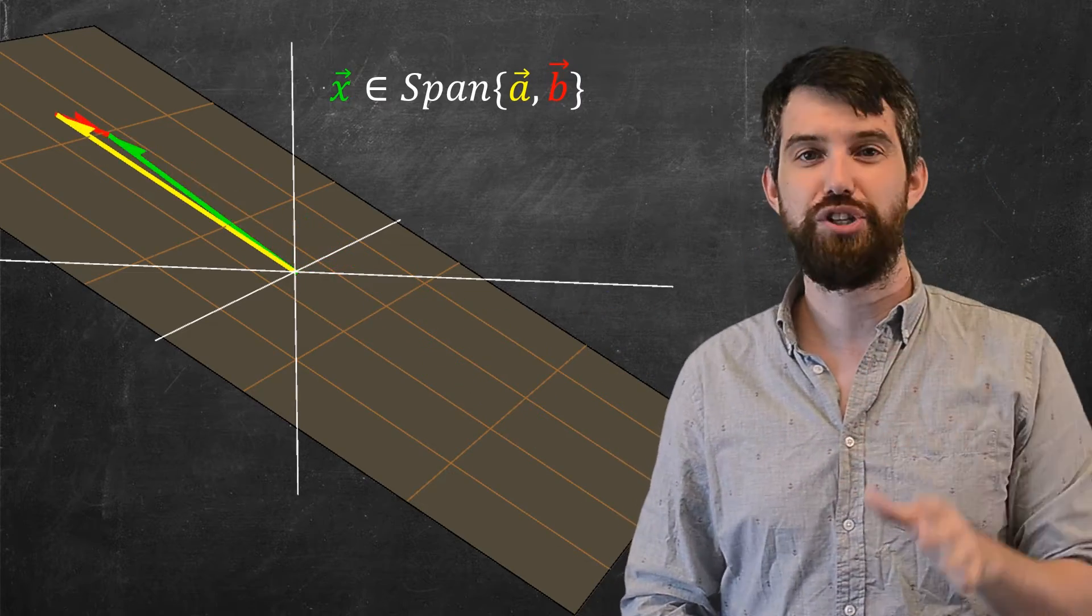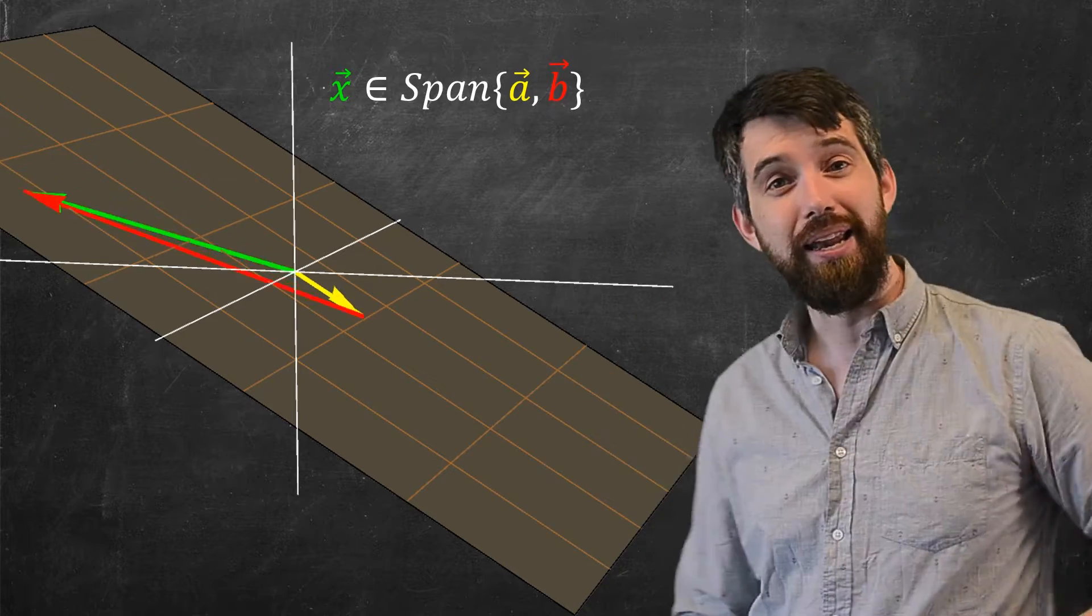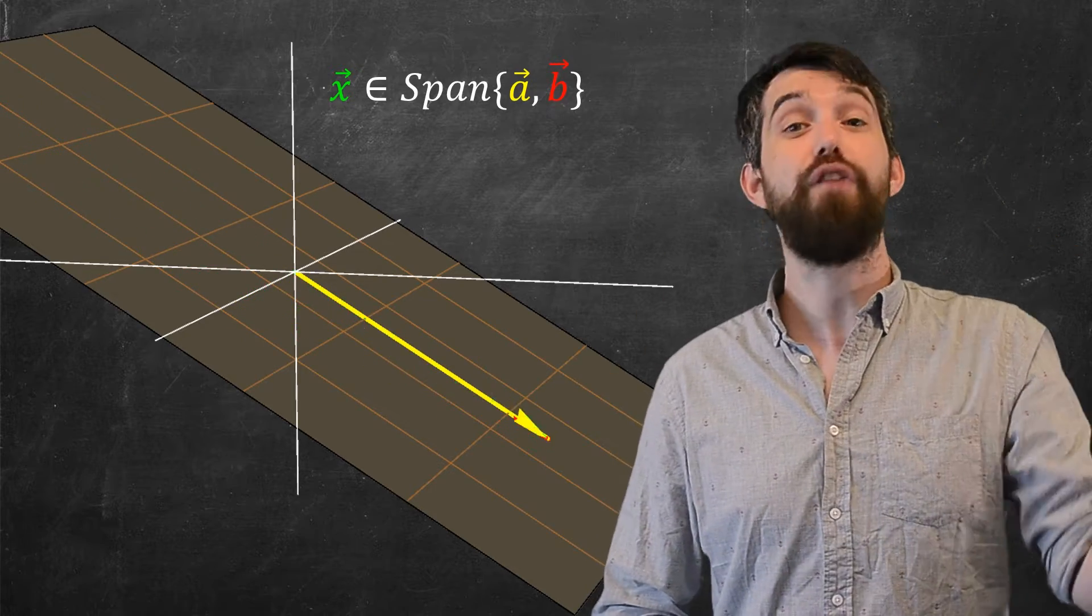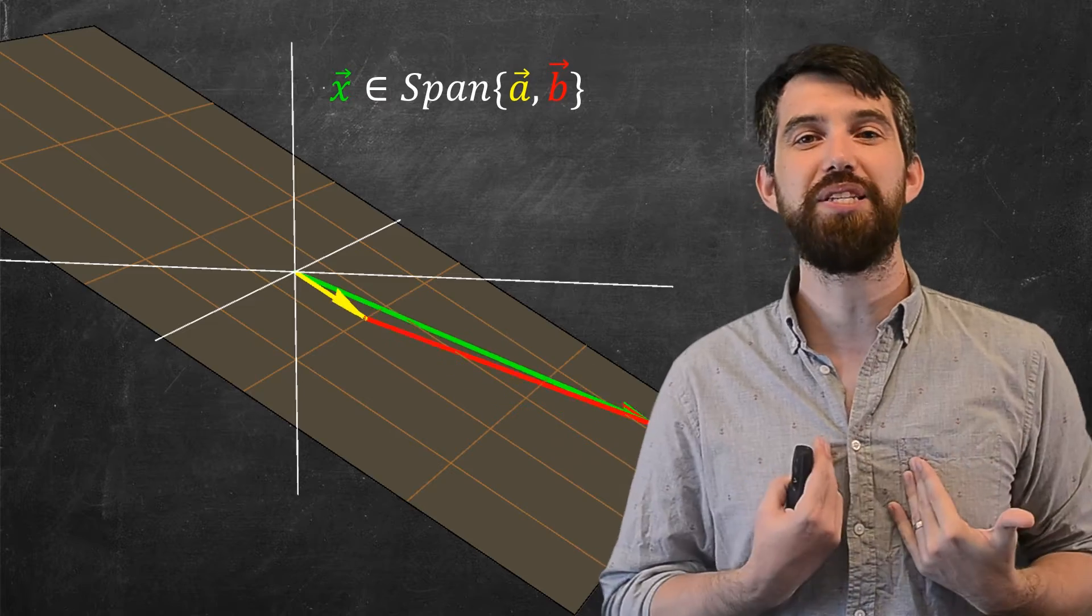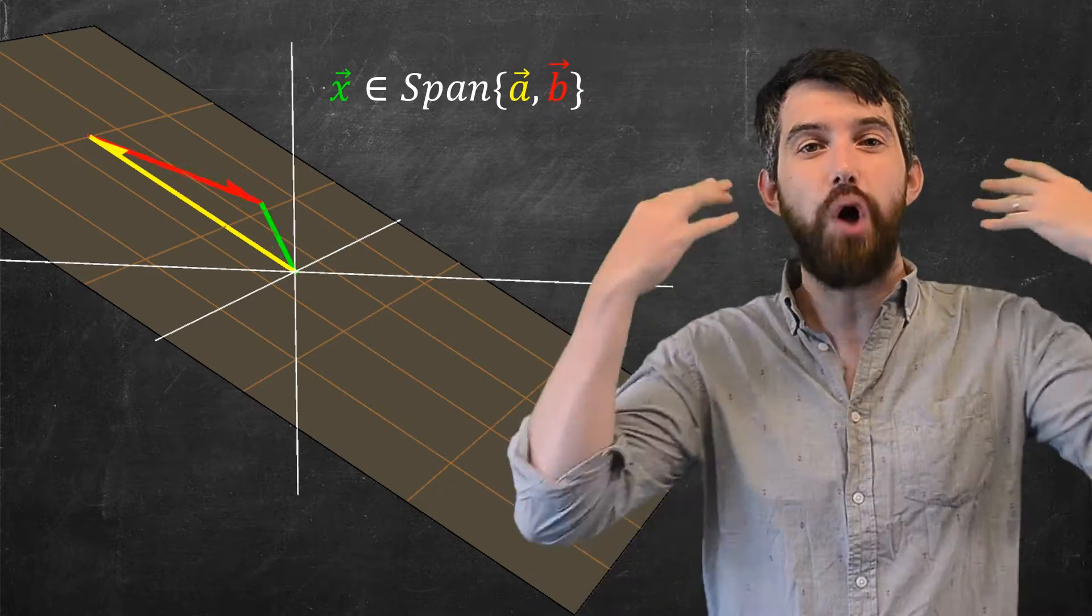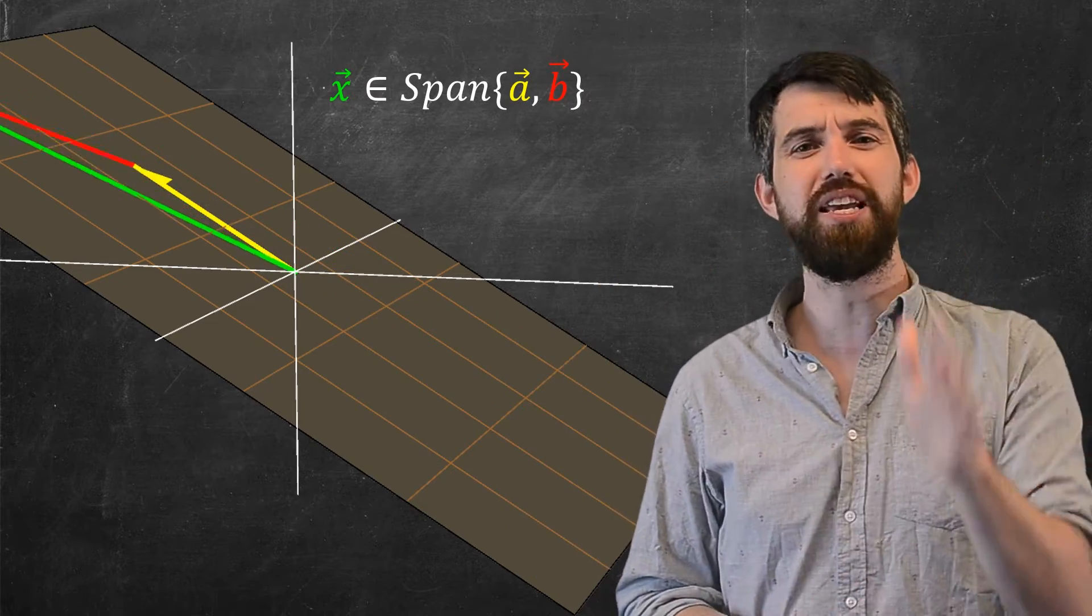Now, my question is this. Is this span, is this plane, a subspace of R3? Well, my argument is going to be that the span of any vectors is always going to be a subspace. And I want you to think about it like this.